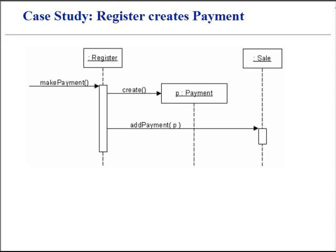This assignment of responsibilities places the responsibility for making a payment directly in the register class. The register is taking part in the overall responsibility for fulfilling the system operation to make the payment. In an isolated example, this is an acceptable solution. But if we keep making the register responsible for other operations, the register will become increasingly burdened with too many tasks.